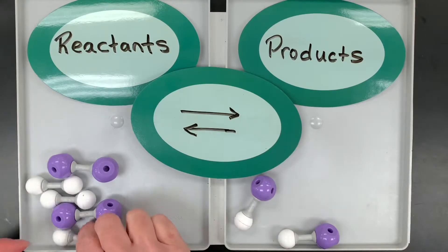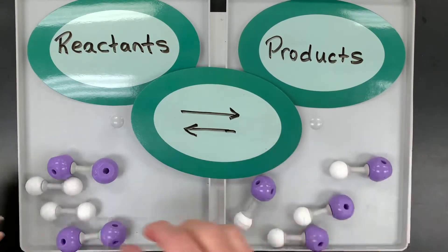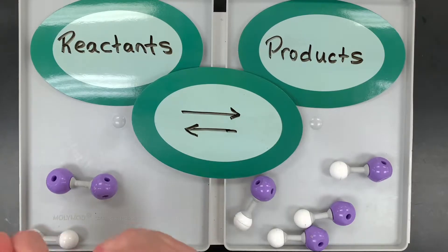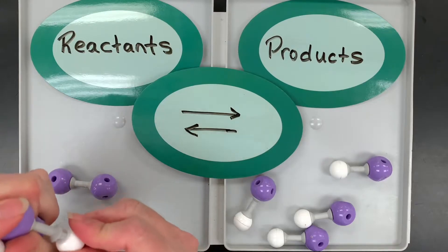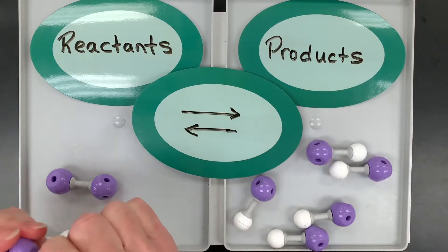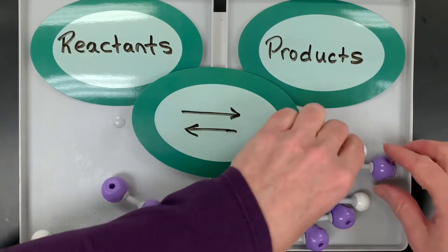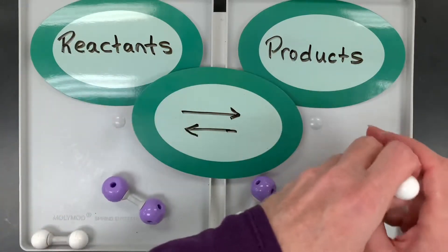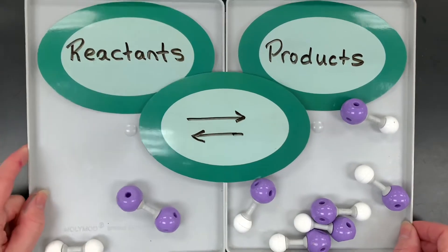At equilibrium, this might be the equilibrium position. Some products turn back into reactants, and those reactants turn back into products. But as you time it and take a snapshot, you see that these concentrations remain unchanged. That's the modeling of it.